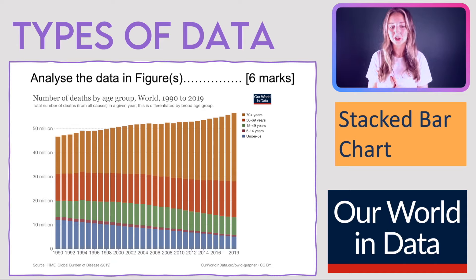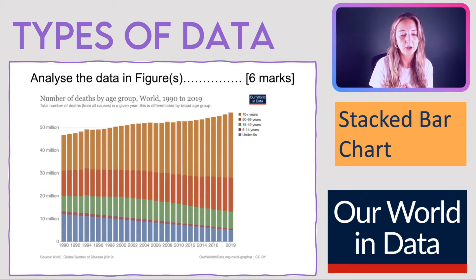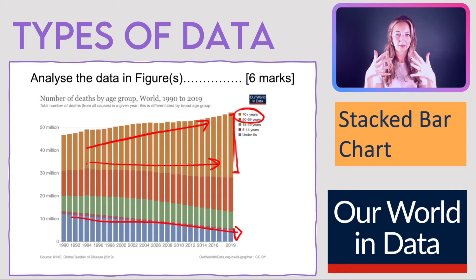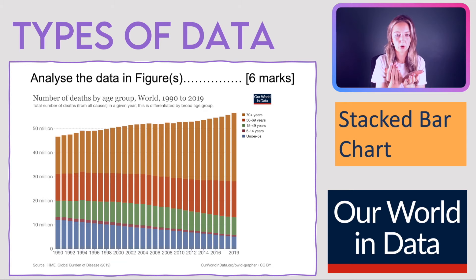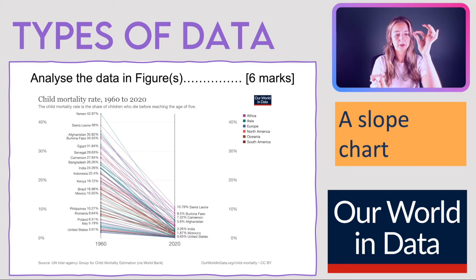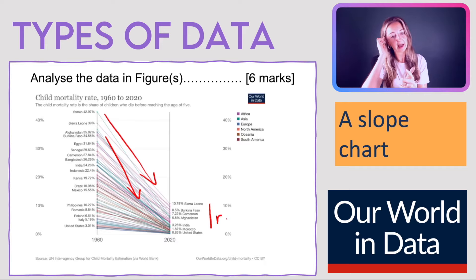For stacked bar charts, similar to stacked area charts, values are added on top of each other. For example, this shows deaths by age group — the 70+ bar is about 20 million in 2019, not 50 million. Look at where values are increasing or decreasing. For slope charts, look at the gradient — which country had the steepest change between two years? You can also rank the data and compare regions, making it a very interesting graph to interpret.